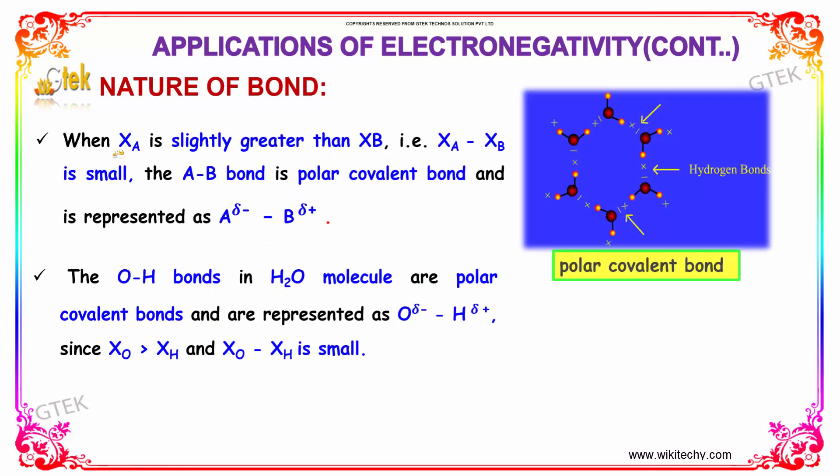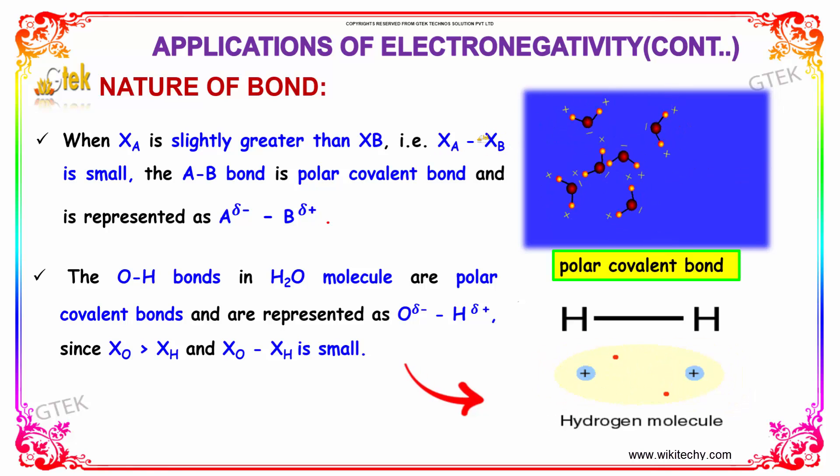When xA is slightly greater than xB, so xA minus xB is small, then the AB bond is a polar covalent bond and it is represented as A delta minus B delta plus. The OH bond in H2O molecule is a polar covalent bond represented as O delta minus hydrogen delta plus, since xO is greater than xH and xO minus xH is small.